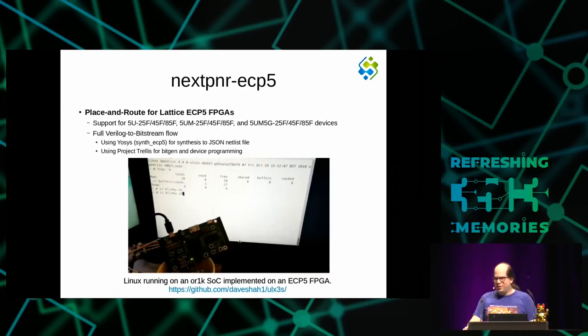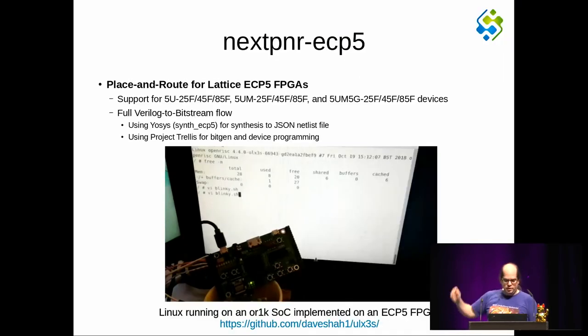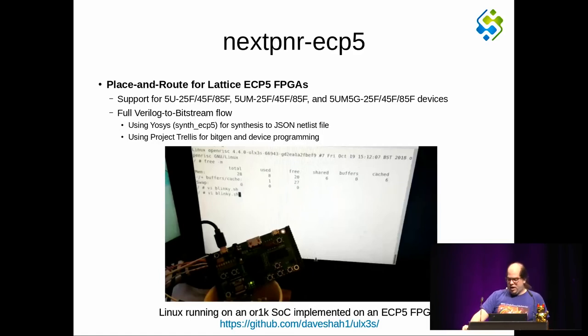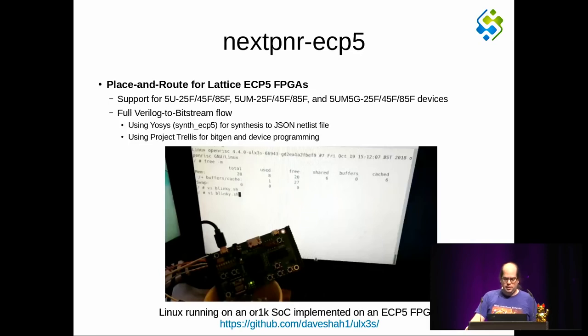This demonstrates that we can work on ECP5. We support all those ECP5 devices and have a full Verilog-to-bitstream flow again using Yosys for synthesis generating a JSON file, which NextPNR reads to do place and route. We then use the Project Trellis infrastructure for bit generation and device programming. The demo shows Linux running on an SoC implemented in that FPGA, demonstrating that we can do place and route for fairly non-trivial designs like a Linux-capable SoC, and you can use shell commands to control LEDs on the dev board.